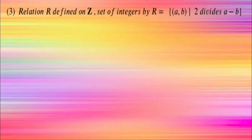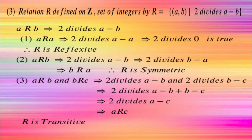Next example: a relation R defined on Z, the set of integers, by R equal to the set of (a, b) such that 2 divides a minus b. If a is related to a, then 2 divides a minus a, which is 0. Since 2 divides 0, it is reflexive.